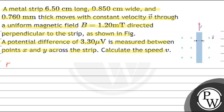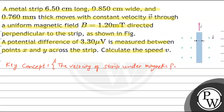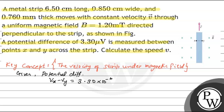The key concept is the velocity of the strip under a magnetic field. Given that potential difference Vx minus Vy equals 3.30 × 10⁻⁶ volt.